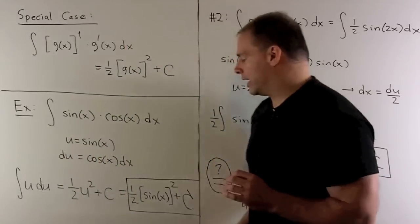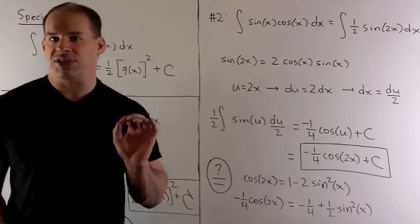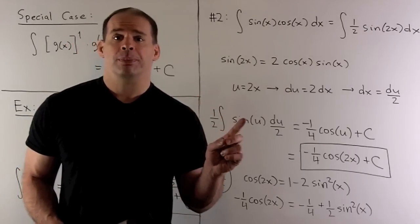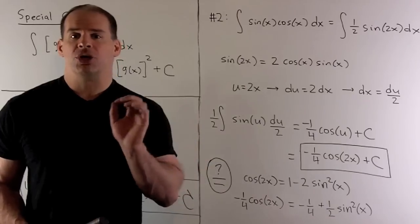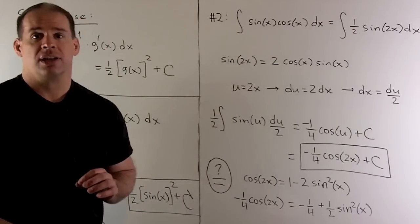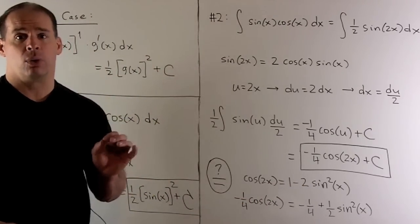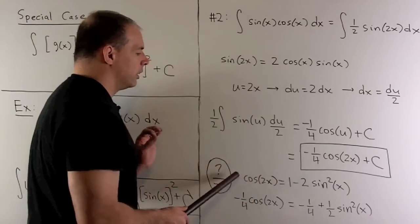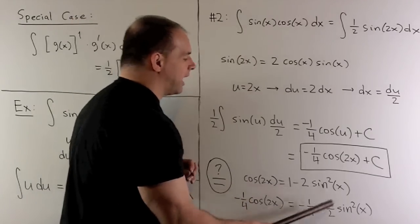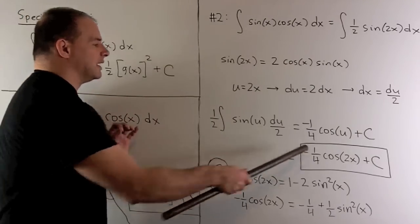You'll note our answer here looks nothing like our answer from the first approach. This is something we need to be reminded about often: just because these don't look alike doesn't mean one of them is incorrect. If you get two different answers for your indefinite integral, they're allowed to be off by a constant. Using the double angle formula, cosine of 2x equals 1 minus 2 times sine squared of x. Multiplying both sides by minus one-fourth gives minus one-fourth cosine of 2x equals minus one-fourth plus one-half sine squared of x. The one-half sine squared of x shows up in our first answer, so these two answers are indeed off by a constant.